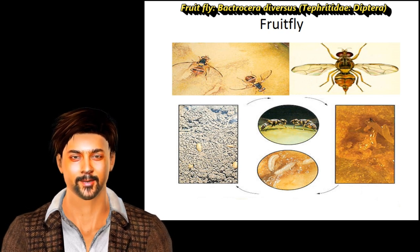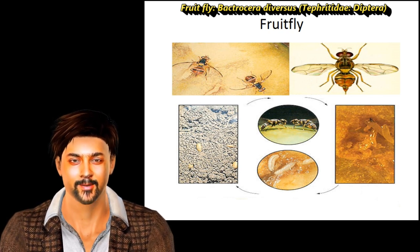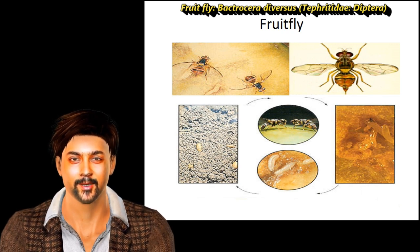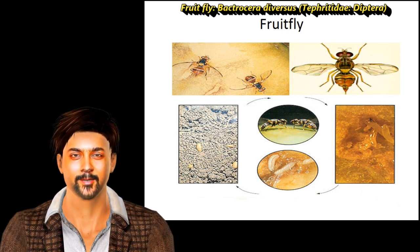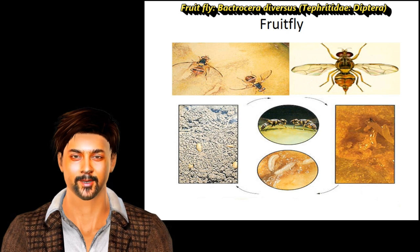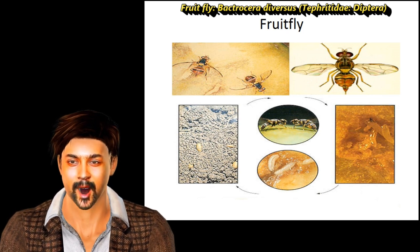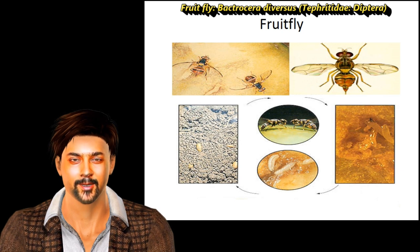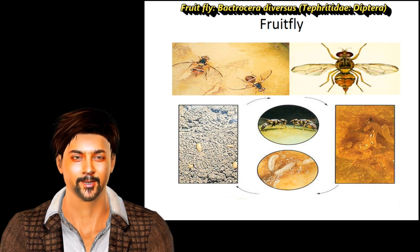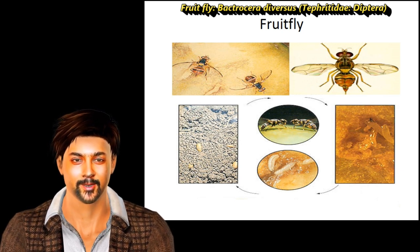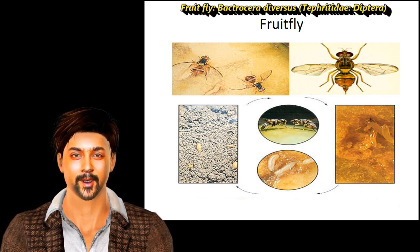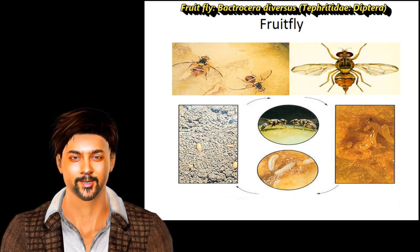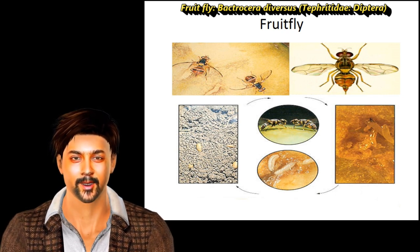Eggs are laid on the soft skin of fruits and the egg period is about 1 to 4 days. Maggots are green and cylindrical, 5 to 8 mm in length, with a larval period of about 4 to 5 days. Maggots pupate in the soil and the pupal period is about 2 weeks. The adult is smoky brown with a greenish-black thorax.